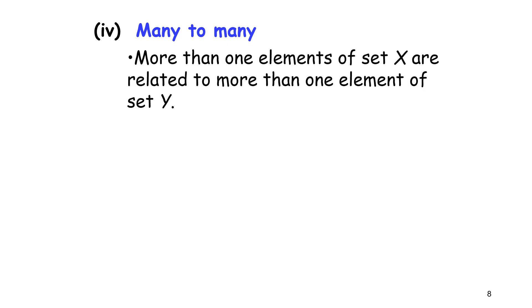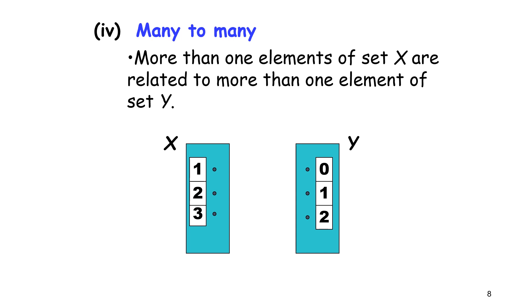Many-to-many. More than one element of set X are related to more than one element of set Y. In element X, we have 1, 2, 3. Element Y has 0, 1, 2. From the arrow, 1 and 2 in element X map to 0, and 3 maps to 1 and 2 in element Y. So we call this many-to-many.